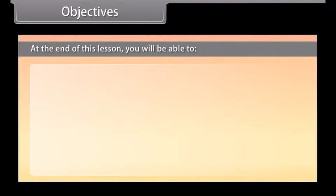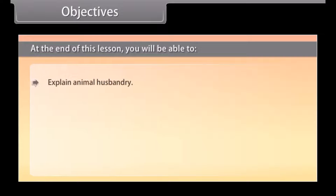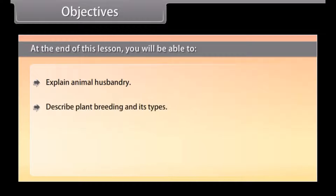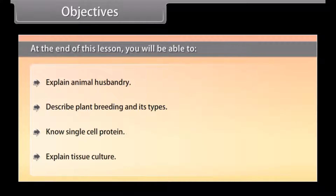At the end of this lesson, you will be able to: explain animal husbandry, describe plant breeding and its types, describe single cell protein, and explain tissue culture.